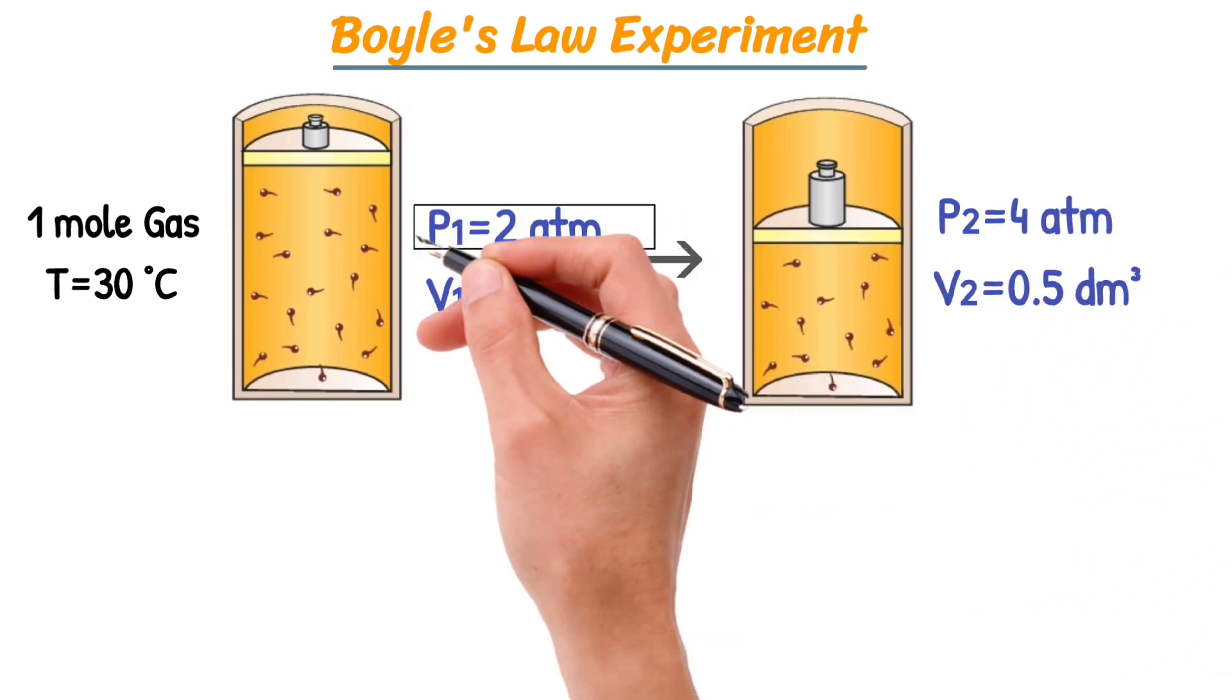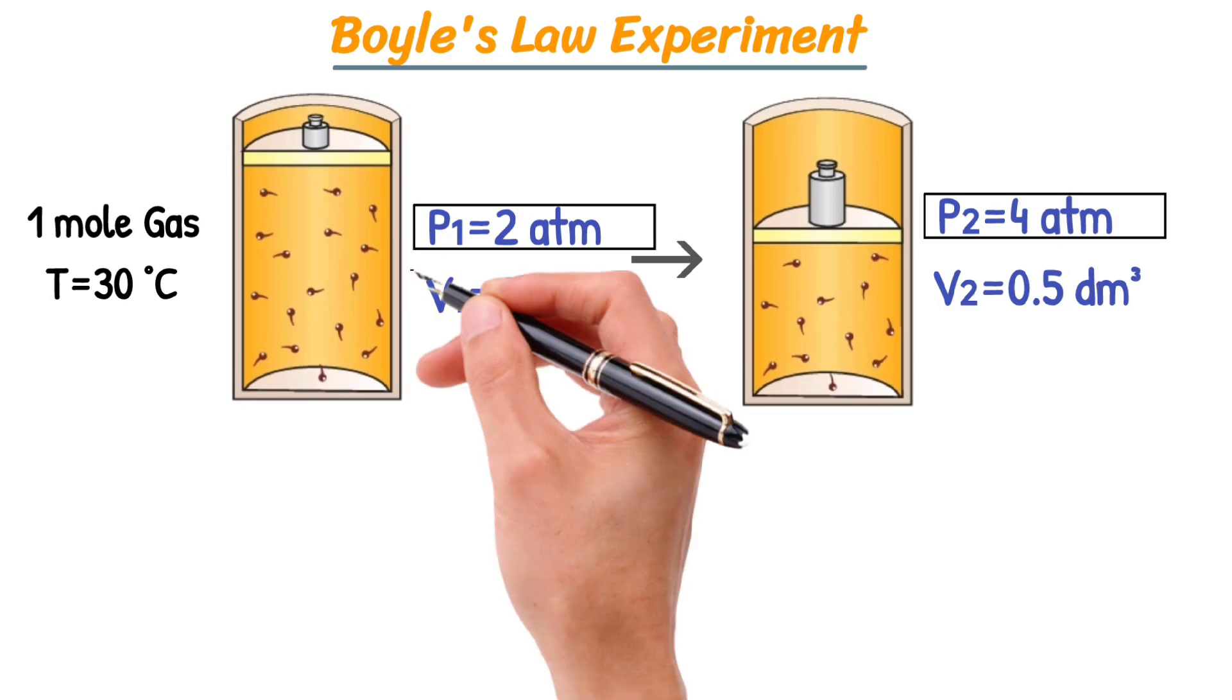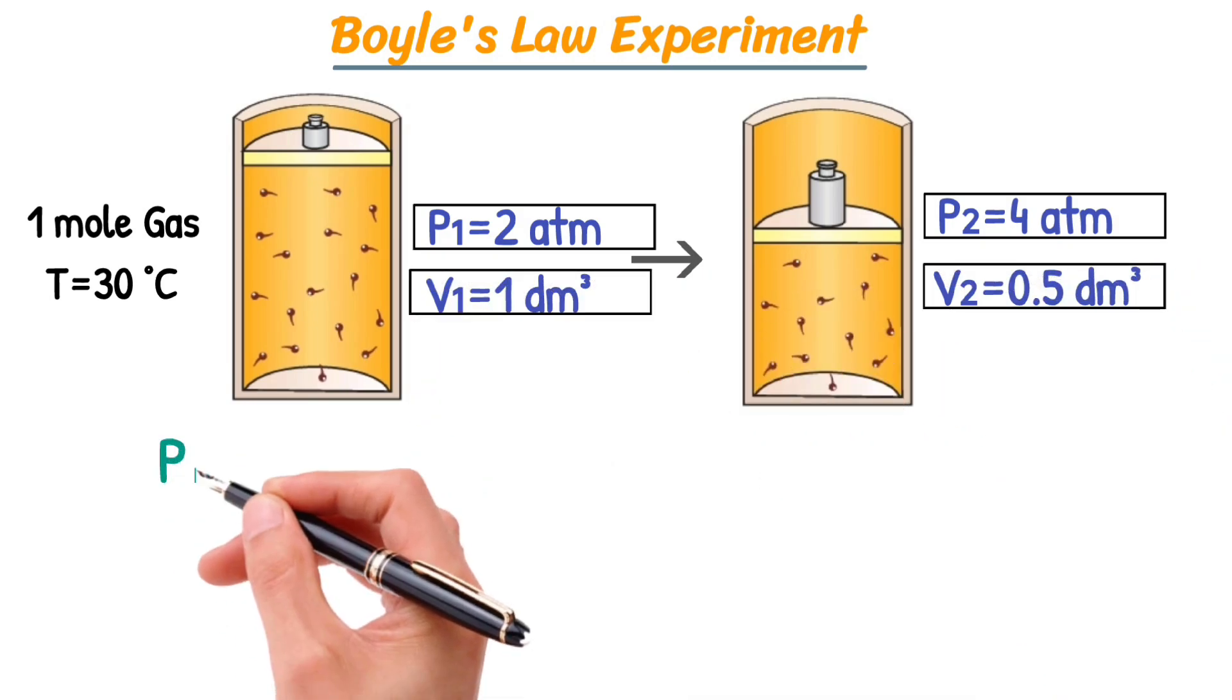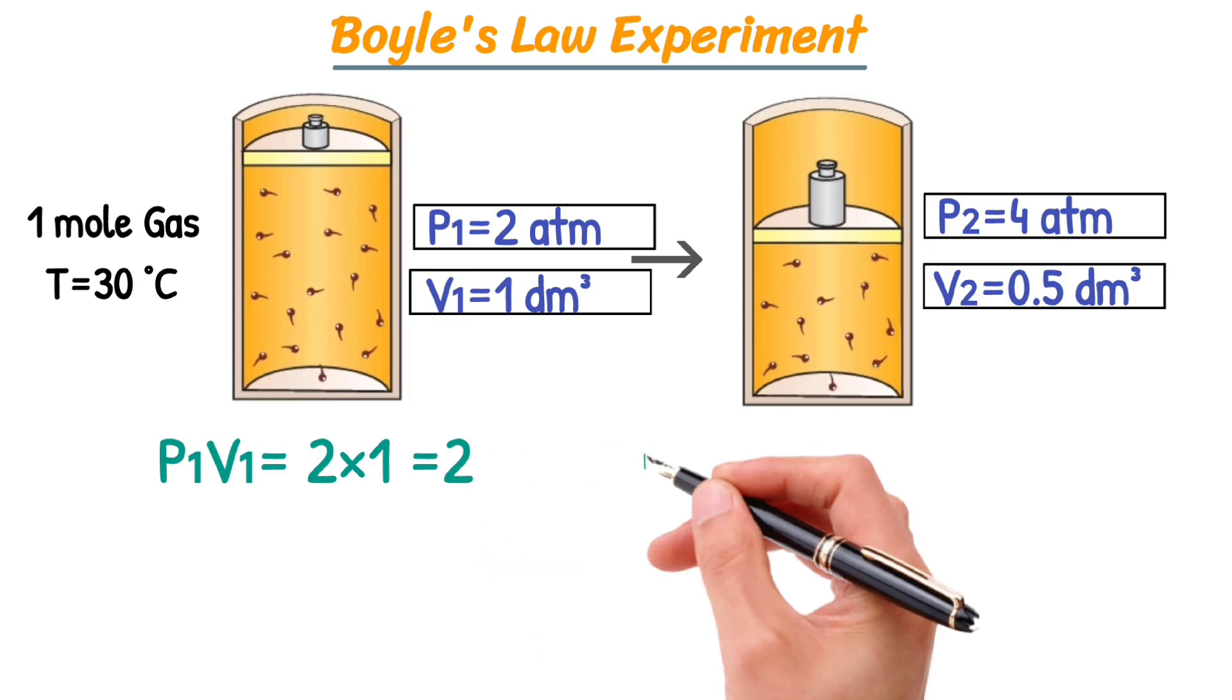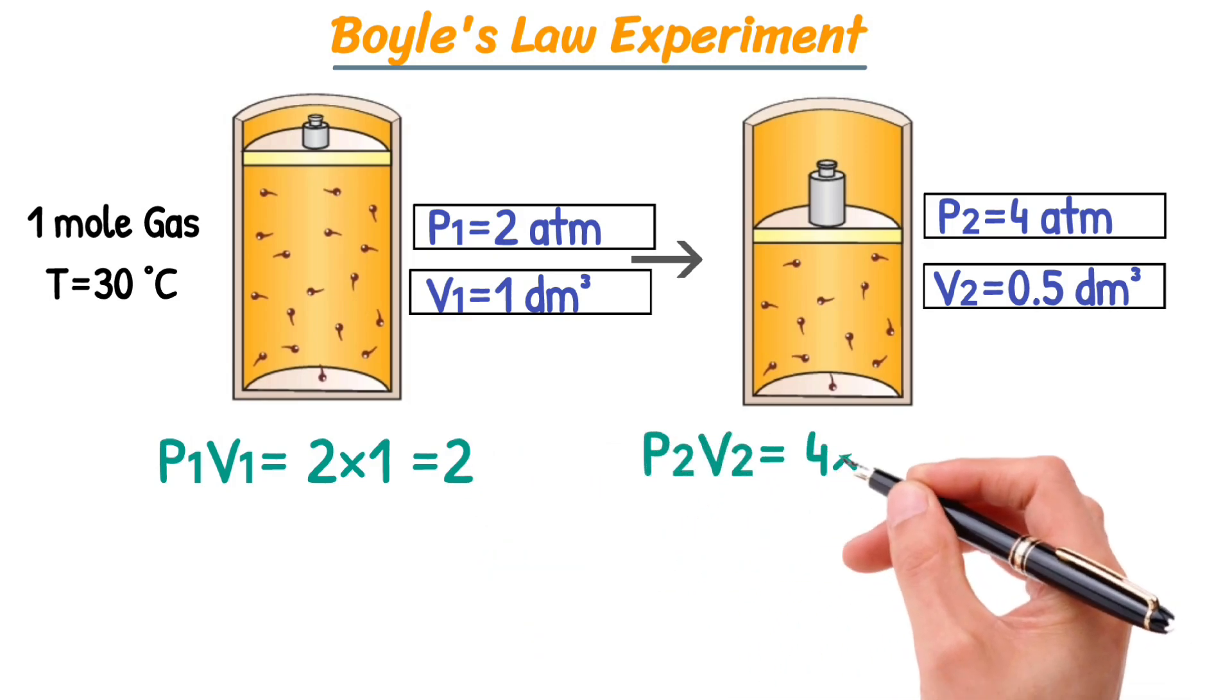This experiment clearly shows that as pressure increases, the volume of the gas decreases. When we calculate the product of pressure and volume for this experiment, the product of all these experiments is constant. It proves Boyle's law.